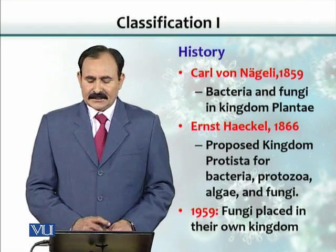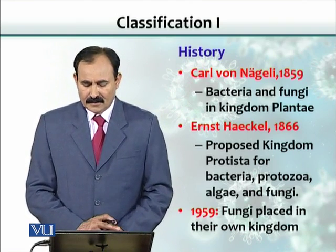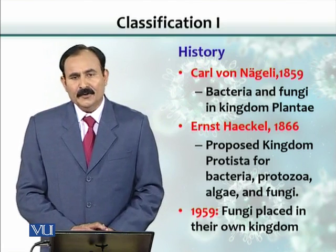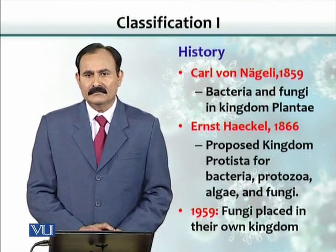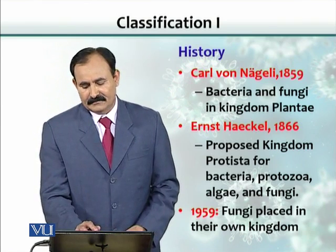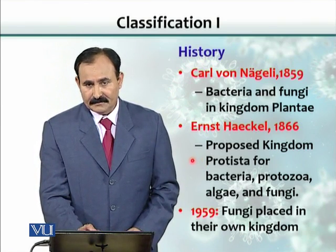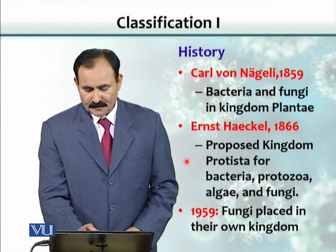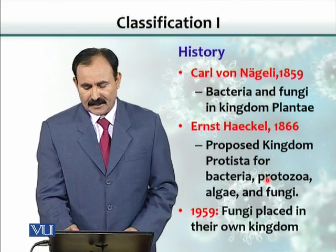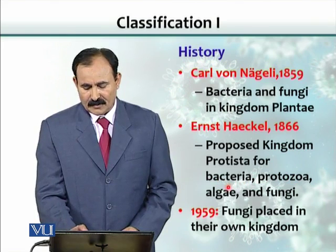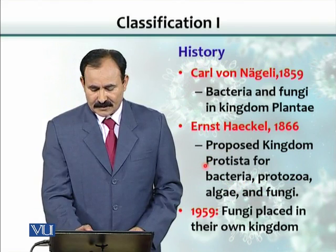In 1866, Ernest Haeckel proposed a different kingdom for microbes and named it Protista. Kingdom Protista was proposed to place microorganisms, especially bacteria, protozoa, algae, and fungi, into Kingdom Protista.